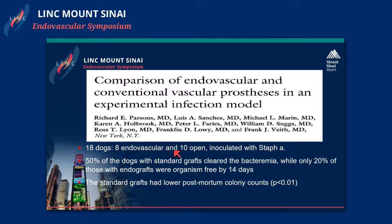A study published out of Montefiore with Dr. Marin, Dr. Sanchez, and colleagues took 18 dogs and managed eight with an endovascular stent graft and ten with an open surgical graft, inoculating all grafts with Staph aureus. They found that 50% of dogs with the standard graft cleared the bacteremia by 14 days, while only 20% of those with an endograft cleared it. After euthanizing the animals, the number of bacteria found on the grafts was significantly higher for stent grafts. They proposed that host defense mechanisms can't target and clear bacteria from stent grafts — something important to keep in mind.